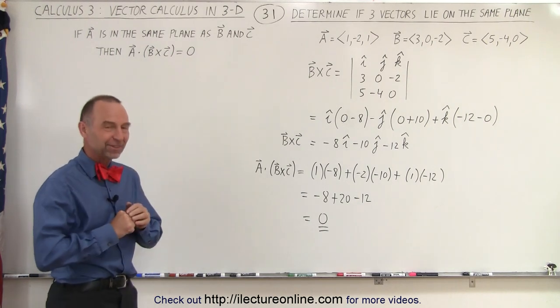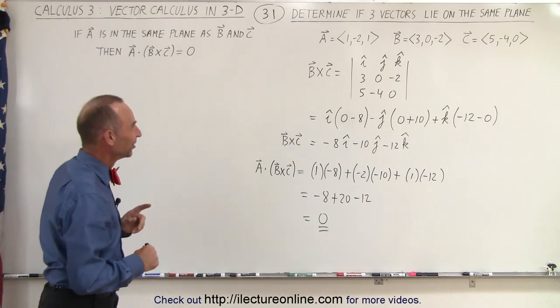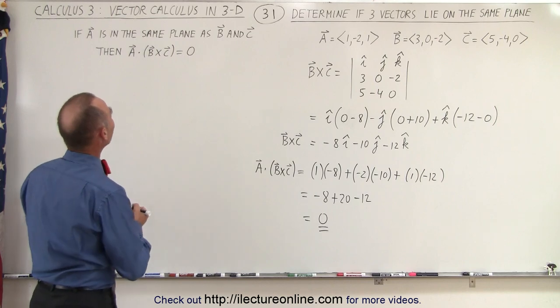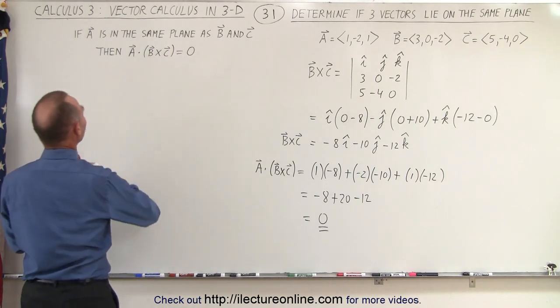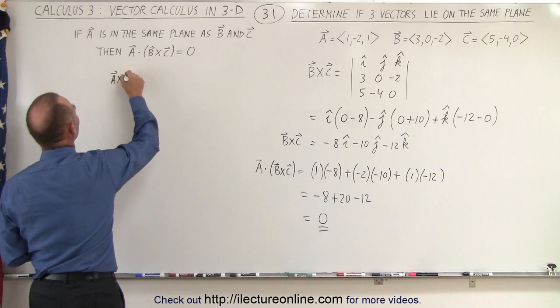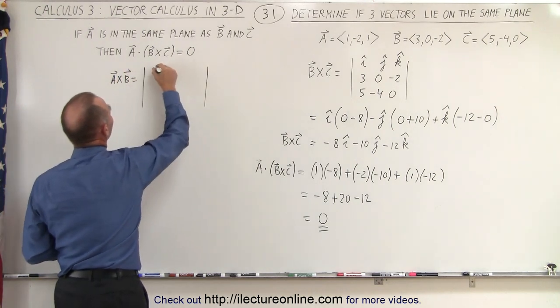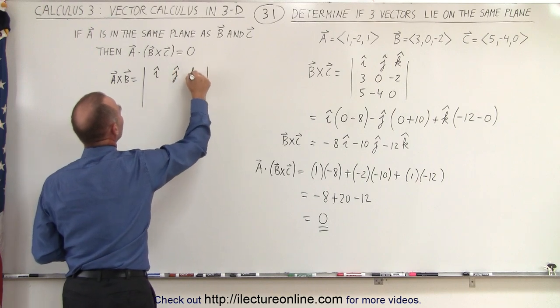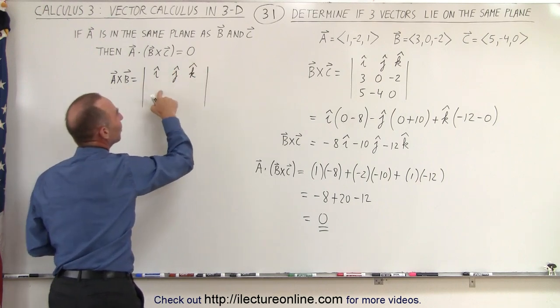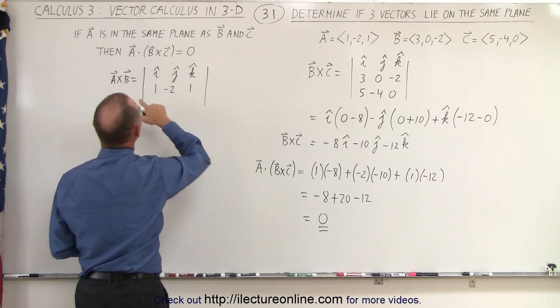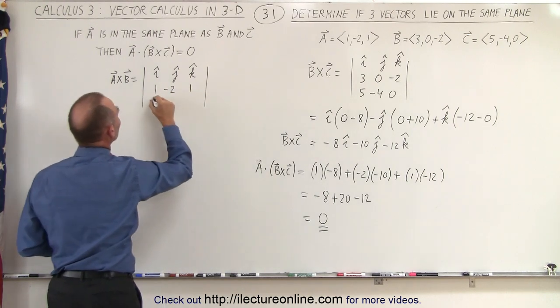By direction of the director of this organization I was told to try a different combination to show you that it does indeed work, so let's go ahead and do A cross B instead. A cross B is equal to I, J, K, the components of A which is 1, negative 2, and 1, and the components of B which is 3,